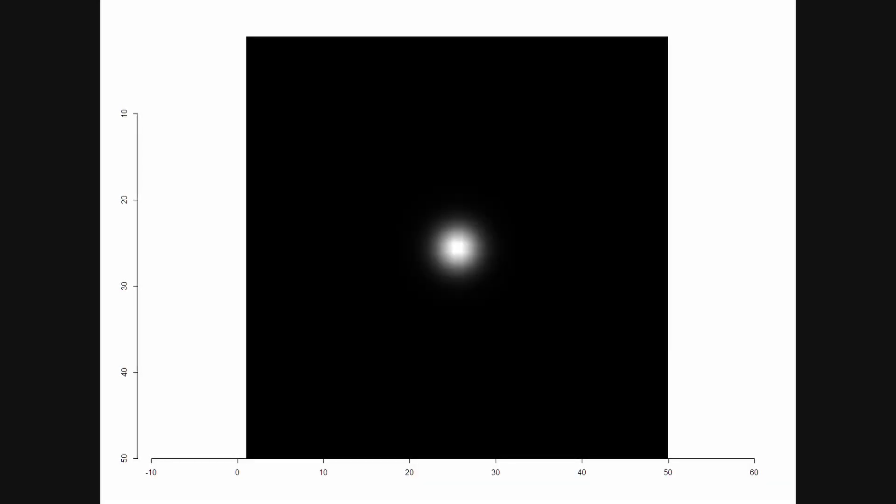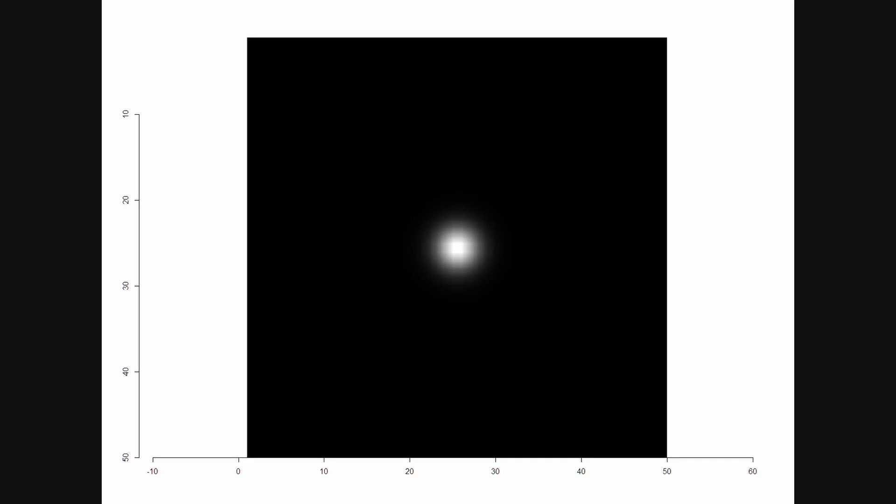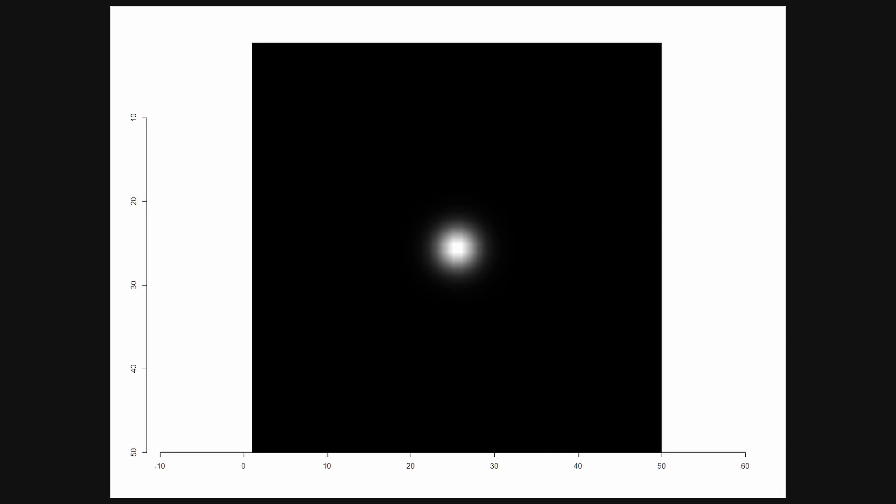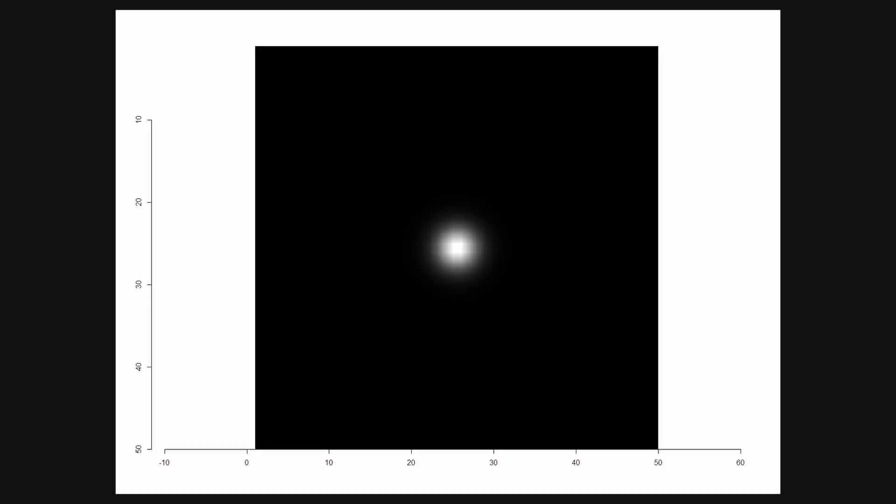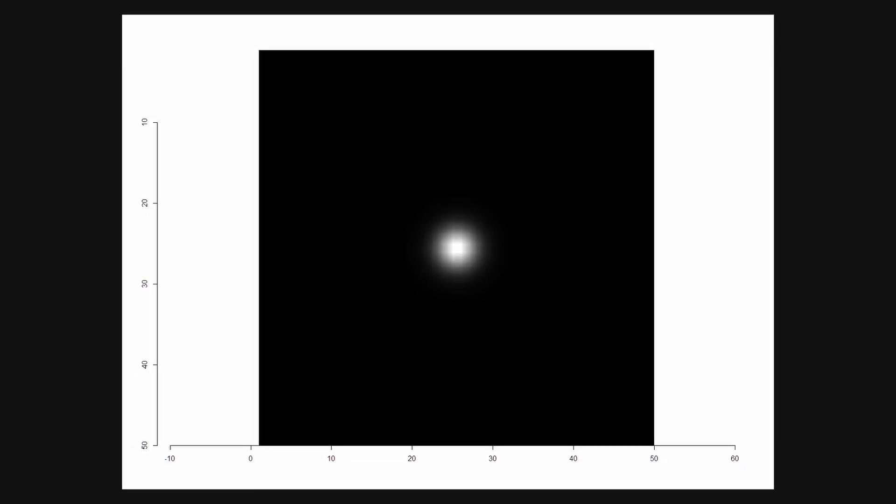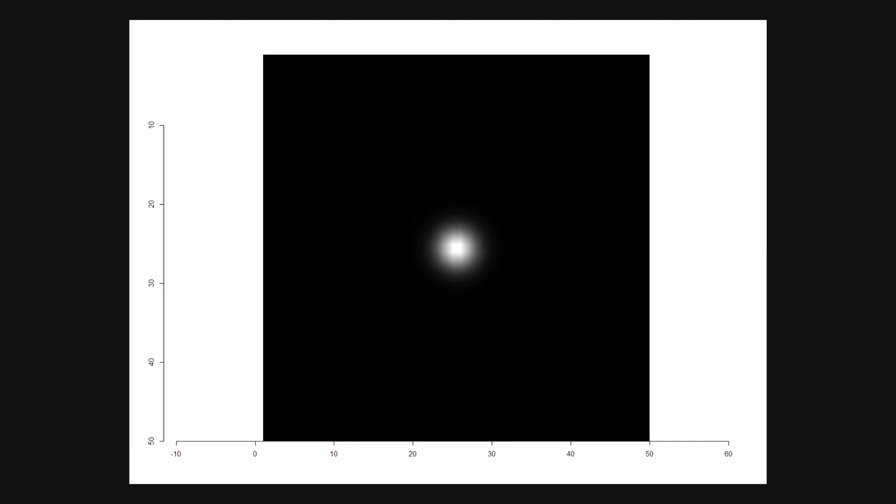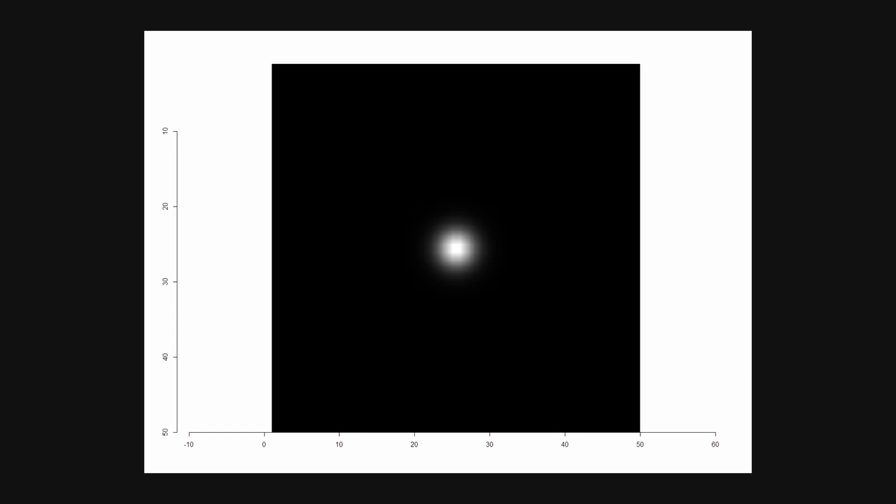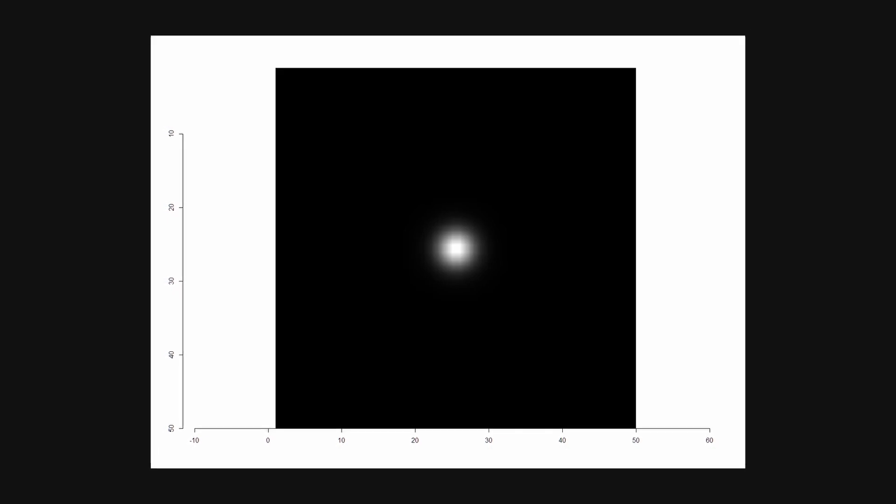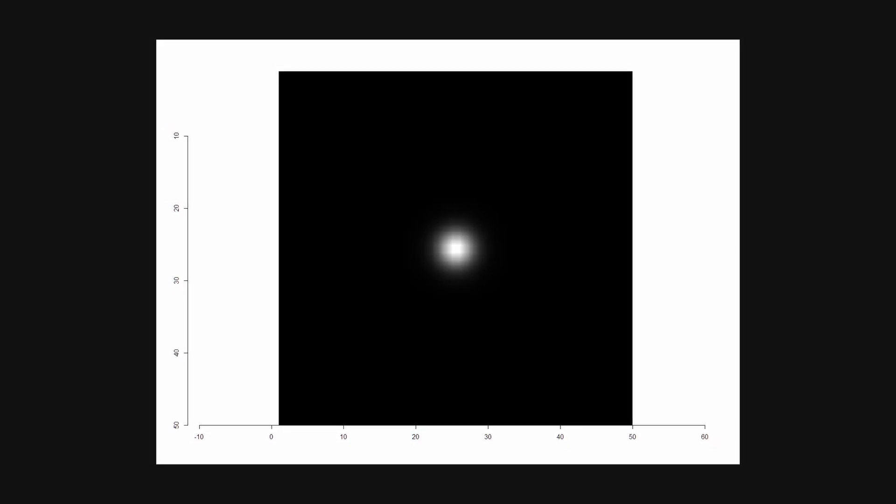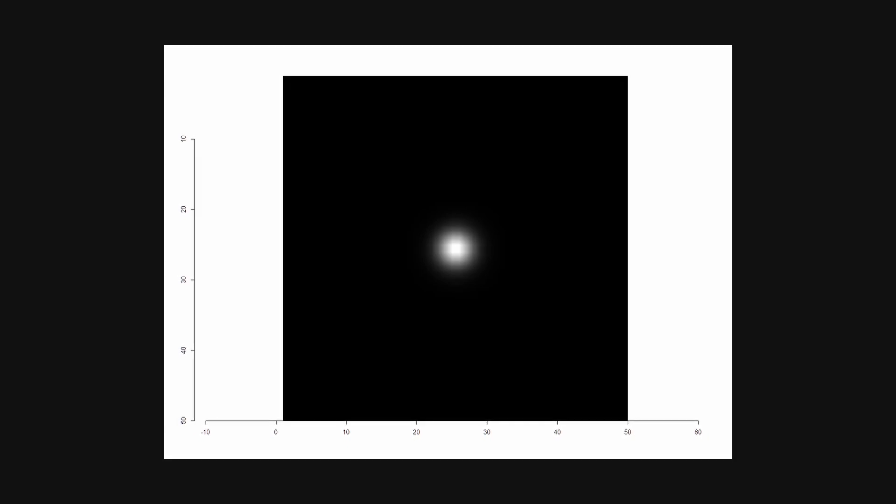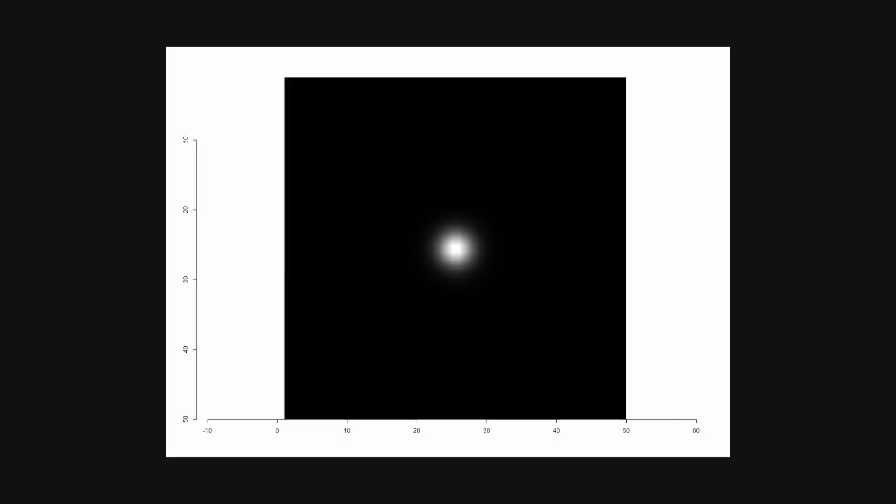Does it look familiar? Well, it should. It's a point spread function, meaning it shows how a point source of light will spread out. Astrophotographers use it all the time to assess the quality of their guiding or in deconvolution when they're processing their images. They'll usually refer to a star's full width half maximum, which is proportional to the standard deviation of the point spread function. It tells how much a point source of light spreads out through diffraction and other effects, like the atmosphere.